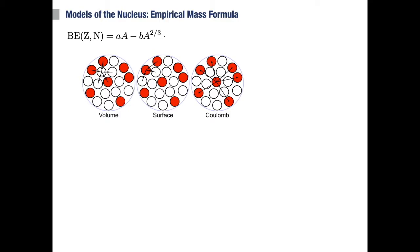To summarize, so far we have two terms: the volume term that is proportional to the mass number, and the correction, the surface term, which is proportional to the surface, that is subtracted from the first. And the two proportionality constants, a and b, are to be determined later.